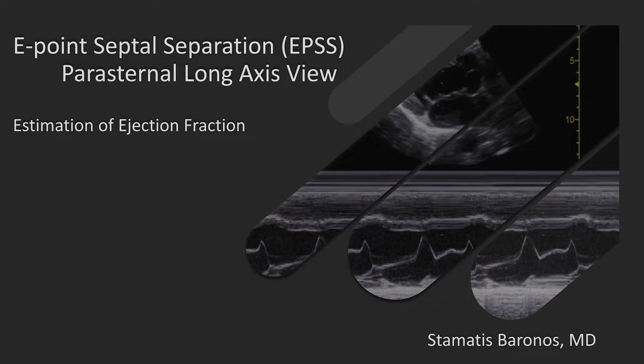Hello and welcome back to the ICU Doc. This is Tomates Baronos and here's another lecture in perioperative and critical care transthoracic echo. In today's presentation we will talk about the E-point septal separation, which is a quick and dirty method to estimate ejection fraction, how to acquire the view, and how to make measurements.